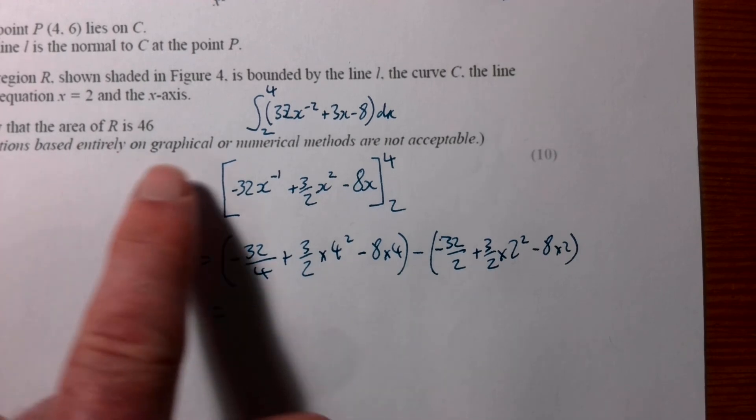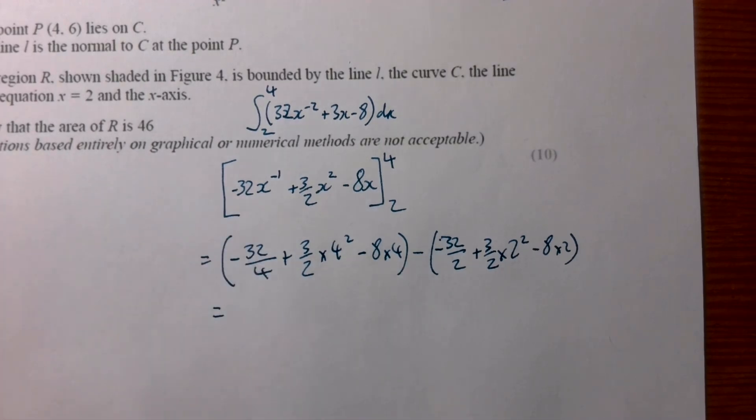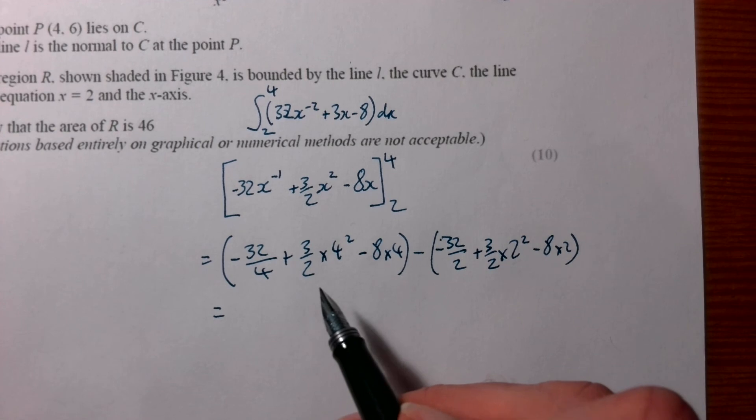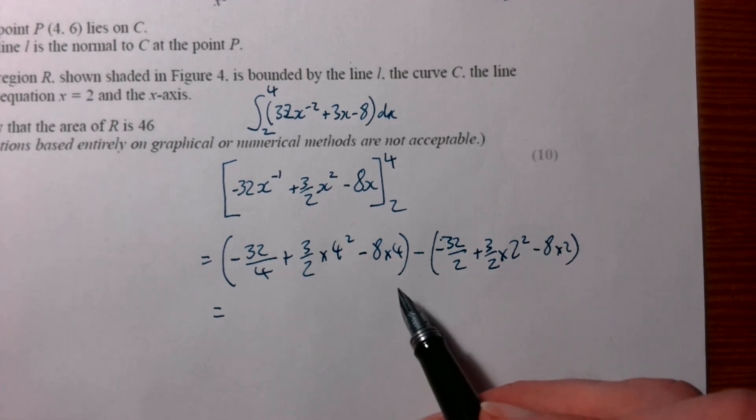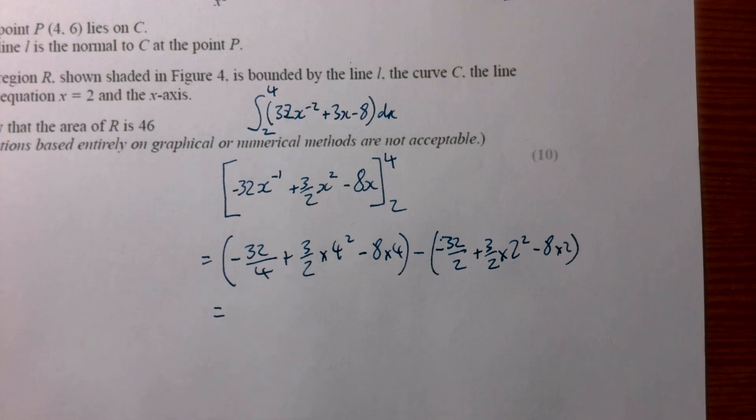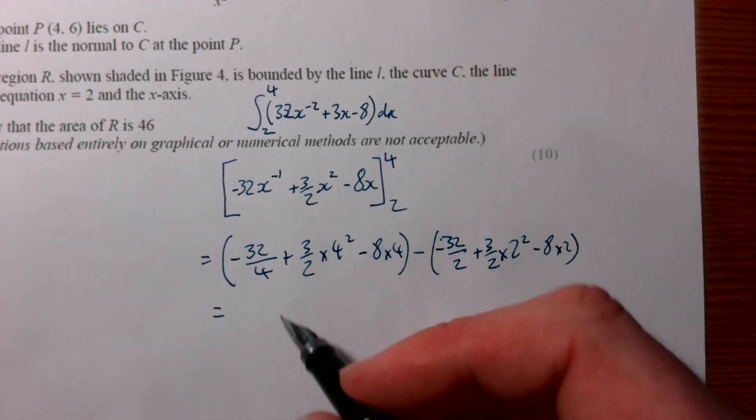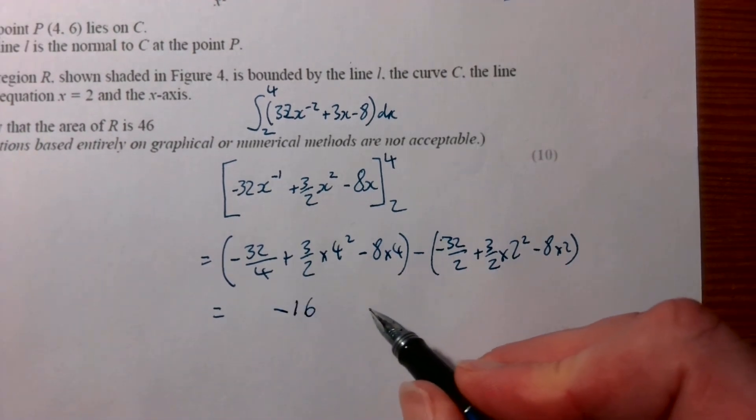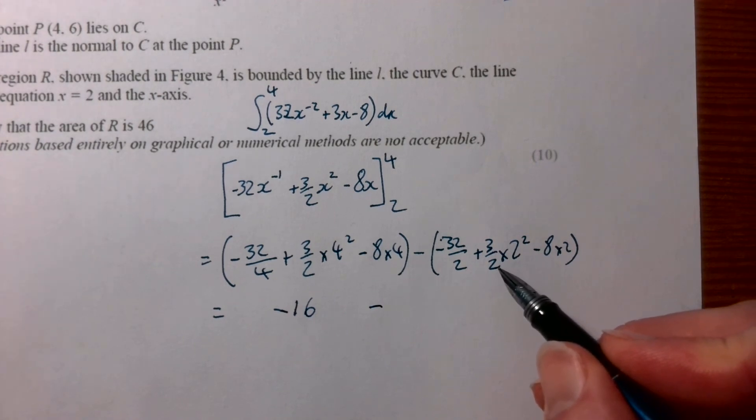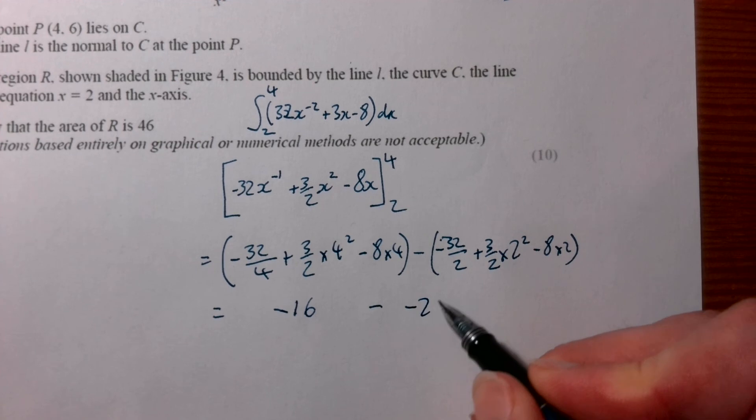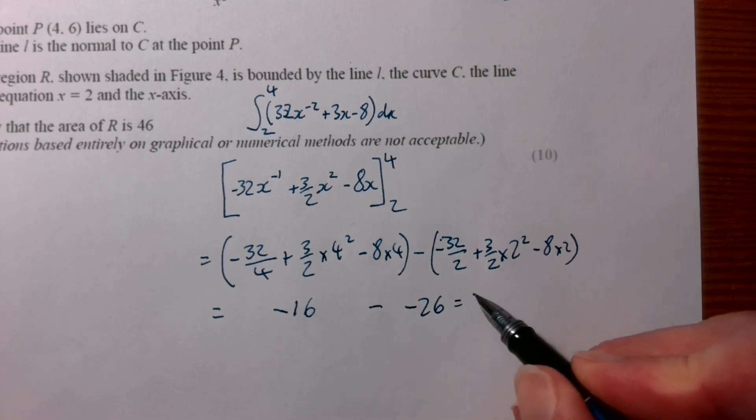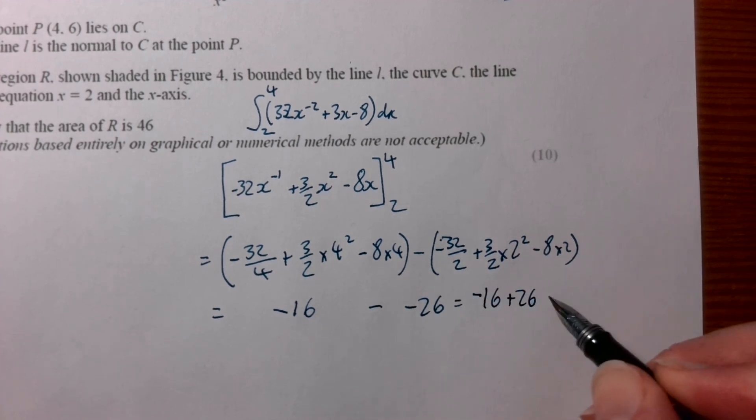Because it says they need to show you the method, we need to show the method all the way. So we could then put that into the calculator, and that should give you negative 16, and we're going to be taking away from that negative 26, which is the same as saying negative 16 plus 26.